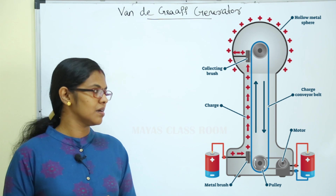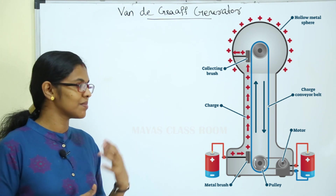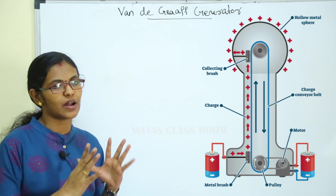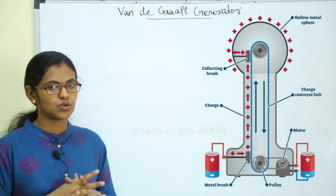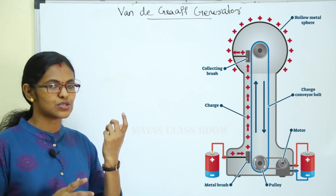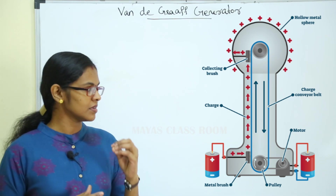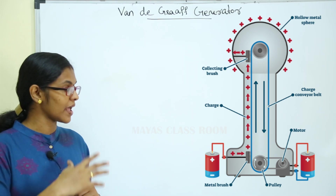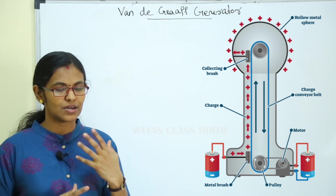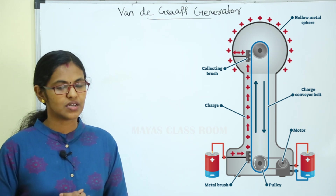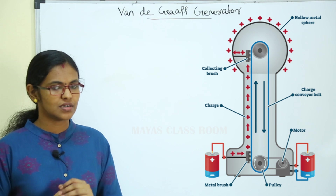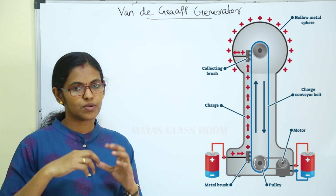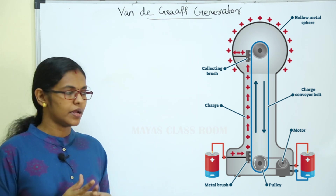There is a figure showing the construction. There is a hollow sphere mounted on an insulating stand. There are two combs — a spray comb and a collecting comb — and two brushes. There is a belt.